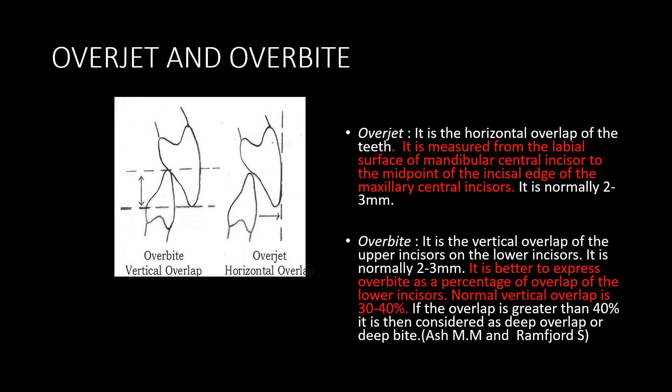Coming to overjet and overbite: the horizontal overlap of the teeth is called the overjet. It is measured from the labial surface of the mandibular incisor to the incisal edge of the maxillary central incisor, and is normally 2–3 mm. Overbite is the vertical overlap of the teeth and is normally 2–3 mm, or can be expressed as 30–40%. If the overlap is greater than 40%, it is considered to be a deep bite.